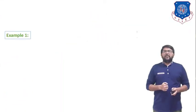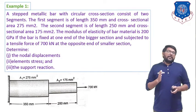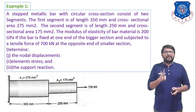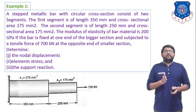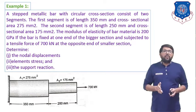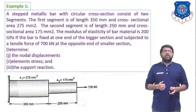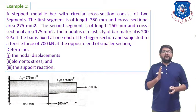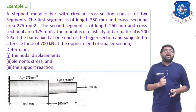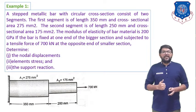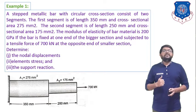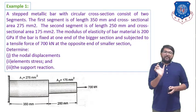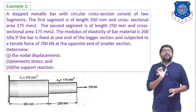Example number one: a step metallic bar with circular cross section consists of two segments, meaning we have a total of two elements. The first segment has a length of 350 mm, so L1 = 350 mm. The second segment has a length of 250 mm and a cross-sectional area of 175 mm square, so L2 = 250 mm and A2 = 175 mm square.